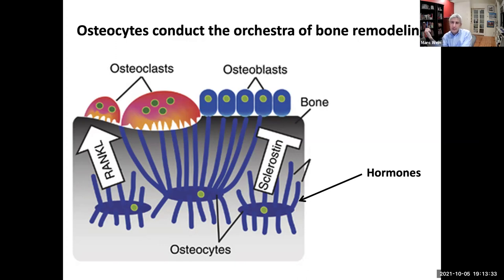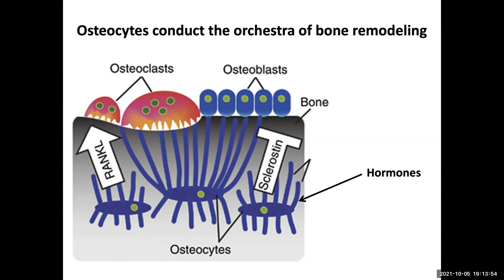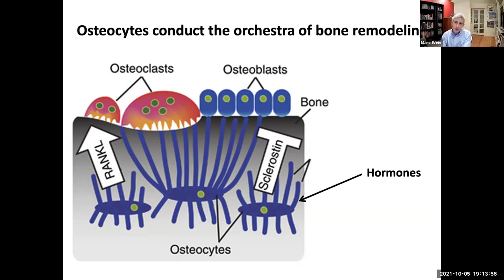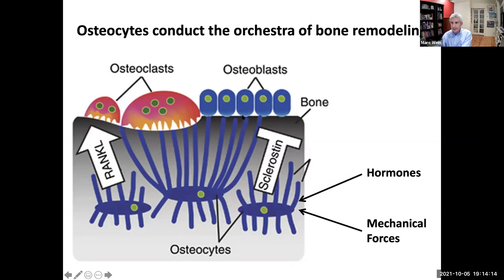What are the cues that osteocytes need to respond to? I would group them into two: there are hormones that influence bone, and there are mechanical forces that also regulate bone remodeling. One of the reasons endocrinologists care so much about osteoporosis is because hormones have such a profound influence on bone remodeling. We'll talk about both of those — the hormones and mechanical forces — and how that information is relayed from the osteocytes to the cells on the bone surfaces.